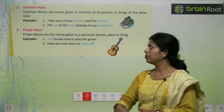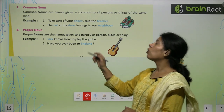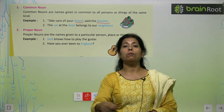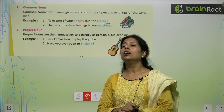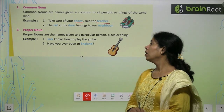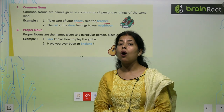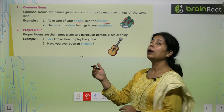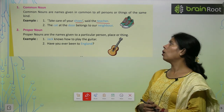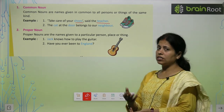For example, 'Take care of your shoes, said the teacher.' यहाँ पर सब पढ़ाते हैं तो हम बोलेंगे 'teacher' — किसी को particular name से नहीं बुलाएंगे। Teacher is a common noun for all those persons who teach or educate us. 'The cat at the door belongs to our neighbor.' Cat and neighbor are common nouns. But if the cat's name is Daisy and we call her Daisy, then it's a proper noun.